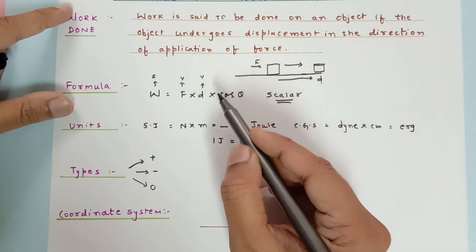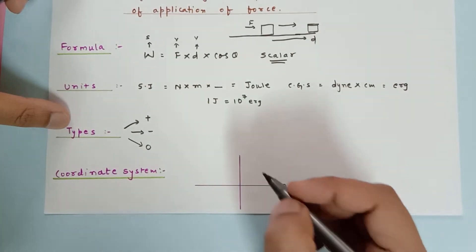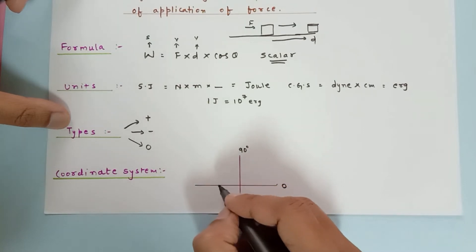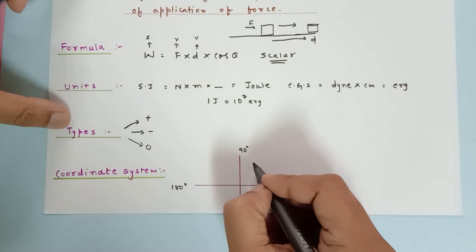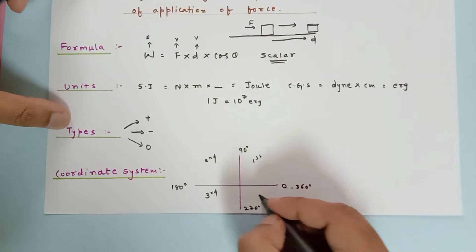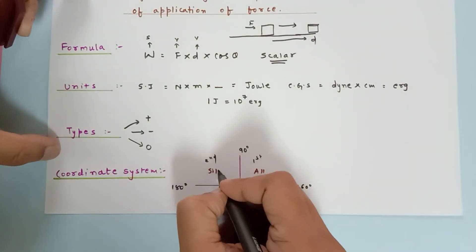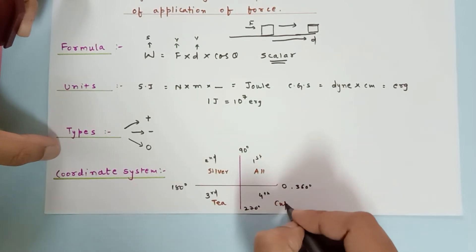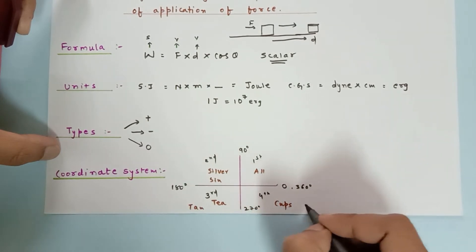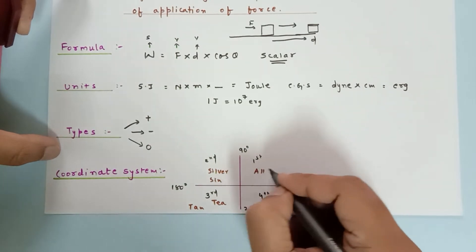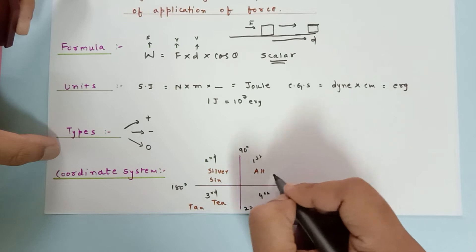Since we are dealing with cosθ, let us review the coordinate system. This is 90°, going further it becomes 180°, then 270°, then back to 360°. These are the first, second, third, and fourth quadrants. Remember: 'All Silver Tea Cups' — all functions are positive in the first quadrant (0° to 90°), so sine, cos, and tan are all positive there.